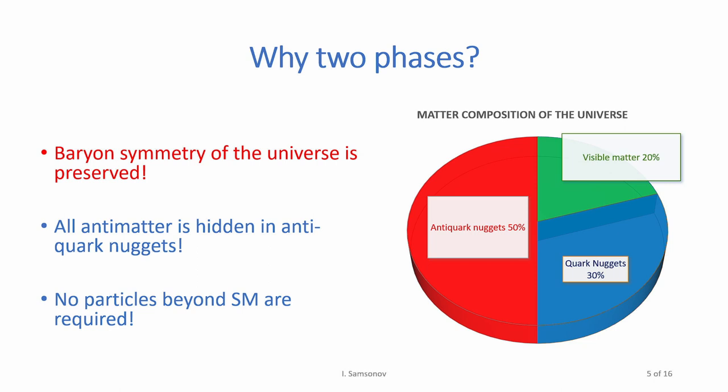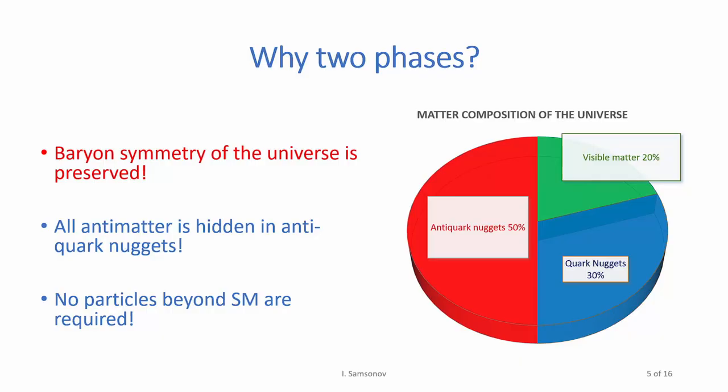You may be wondering why we have two types of particles in this model. This idea is actually good because anti-quark nuggets may constitute 50% of matter in the universe, and the other 50% may be shared between quark nuggets and visible matter. In this case, the baryon symmetry of the universe is preserved. So all anti-matter is actually hidden inside these anti-quark nuggets.